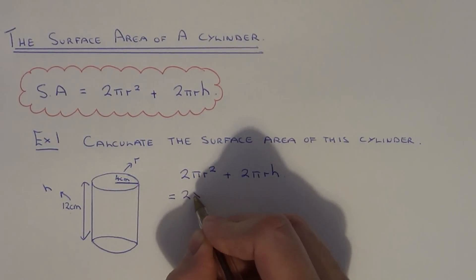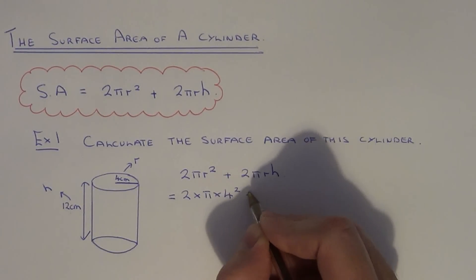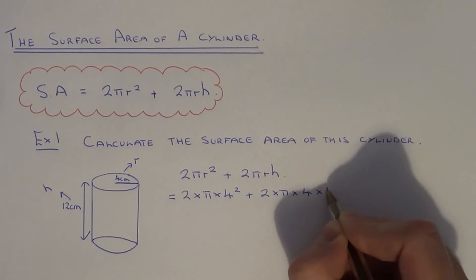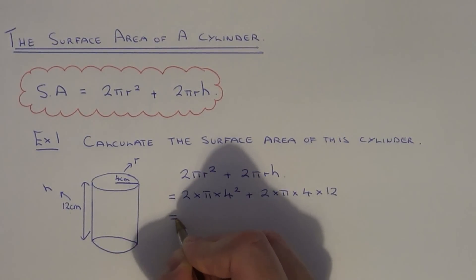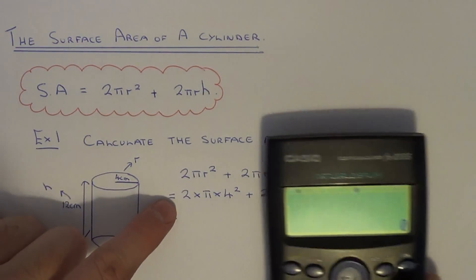we get 2 times π times 4 squared plus 2 times π times 4 times 12. So if you have a decent scientific calculator, you should be able to just type all this in in one go.